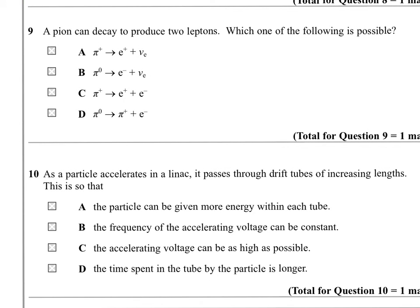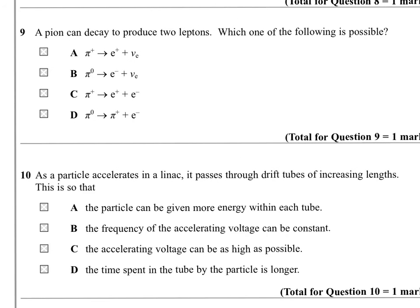Question 9. A pion can decay to produce 2 leptons. Which of the following is possible? So we need to look at the conservation laws here. Answer A is conserving charge. Answer B isn't conserving charge. Because you've got zero going to a negative thing. Remember that the neutrino is uncharged.